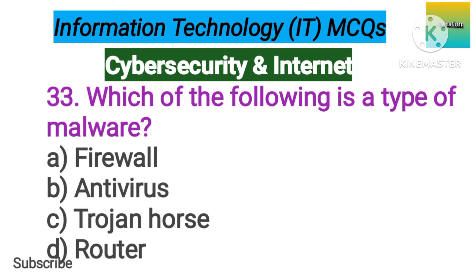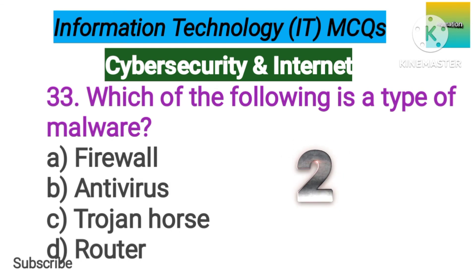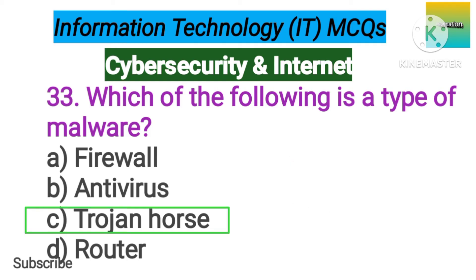Number 33. Which of the following is a type of malware? Option A: Firewall. B: Antivirus. C: Trojan Horse. D: Router. The correct answer is option C, Trojan Horse.